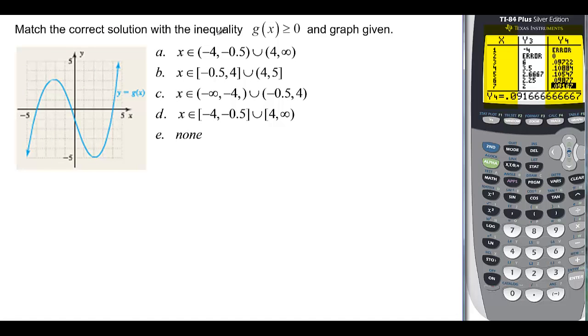Last problem. Match the correct solution with the inequality. When g of x is greater than 0. If we look at this. We have a 0 here. At negative 4. We have a 0 here. That looks like maybe negative 1 half. Or something to that effect. And then we have one again. Here at positive 4. And this negative 1 half. Would be 0.5. So we want it to be greater. So we want it to be between negative 4. And negative 1 half. So it starts at negative 4. And it should include it. So it's not going to be this one. This one starts at negative 4 inclusive. And it goes to negative 1 half. So far so good. And then we also want this part. Which starts at 4. And goes to infinity. And it includes that one. So we would say D.